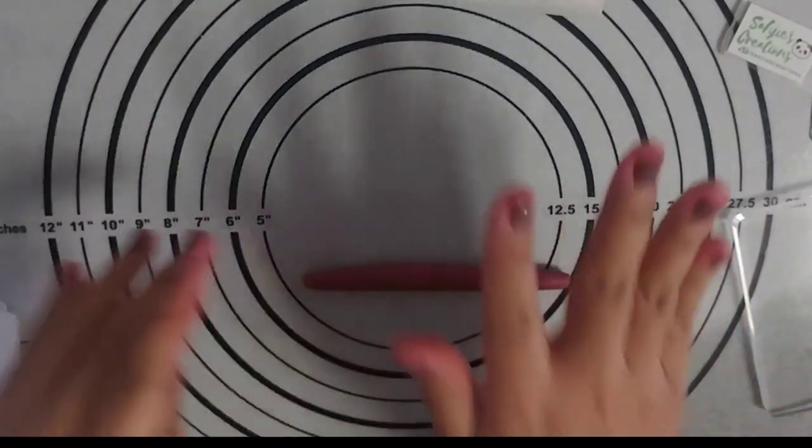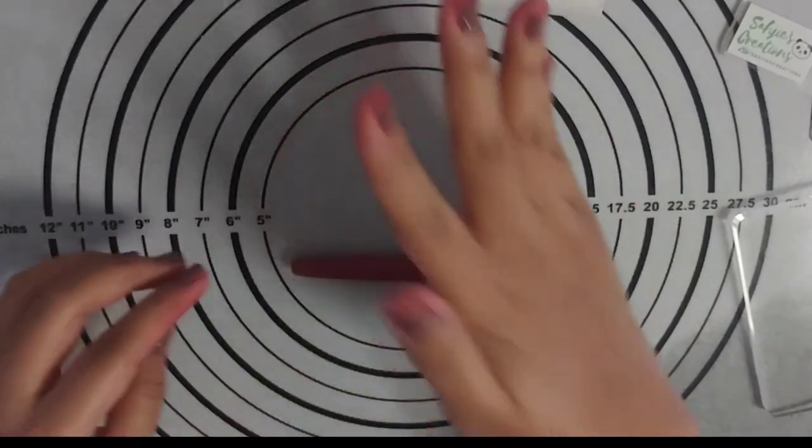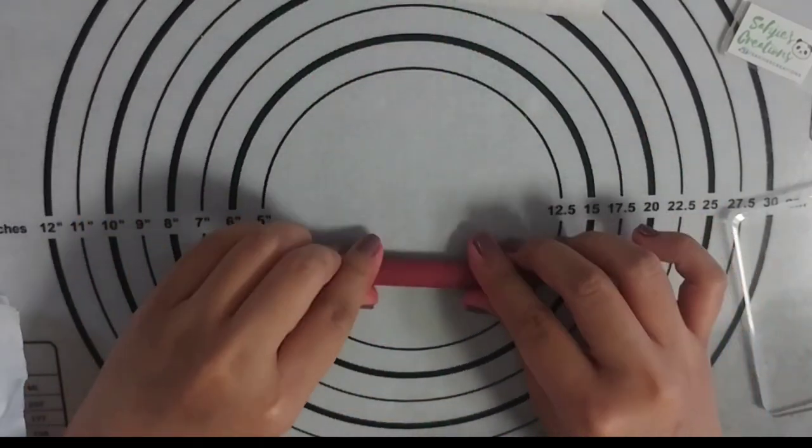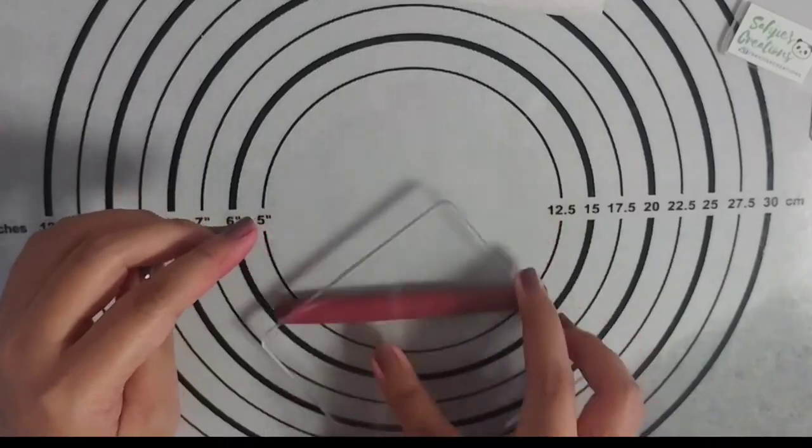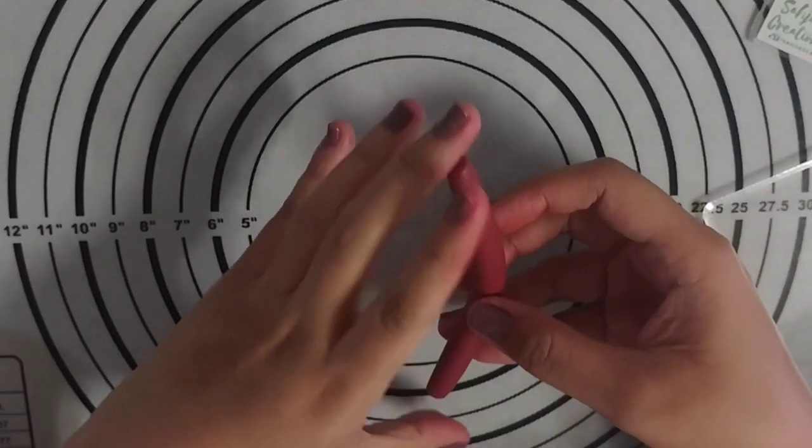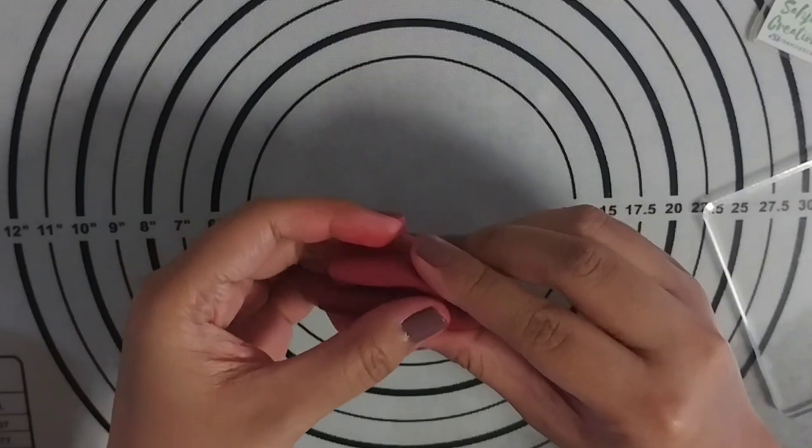I remember her pants to be maroonish so I combined red and black clay. I rolled it into a log using an acrylic block to make it even but I also made sure that the ends are a bit thinner since we're folding it in half to make her legs.